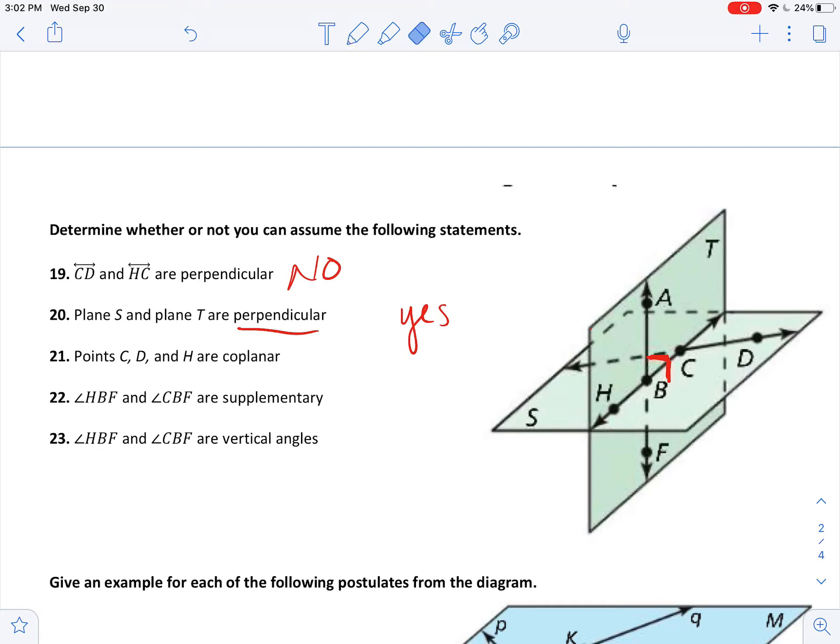Number 21, points C, D, and H are coplanar. This is probably the trickiest one. So if you notice, C and H are on this intersection line, which means they're both on the vertical plane and they're also both on the horizontal plane. So C, B, and H are on both planes.